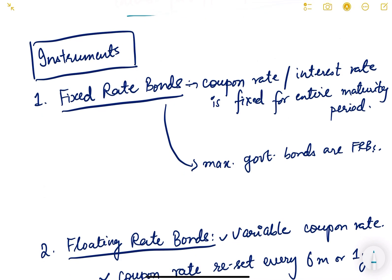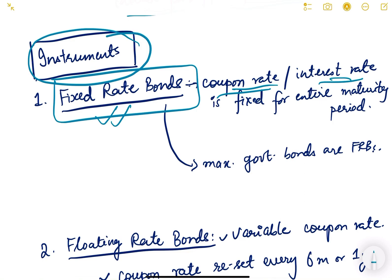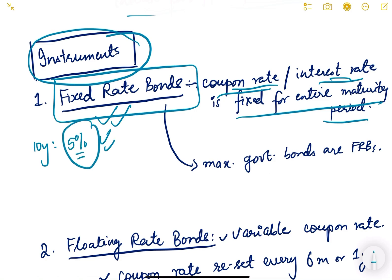Now let us look at the different instruments for government bonds. The first one is fixed rate bonds. The coupon rate or interest rate is fixed for the entire maturity period. For example, if it is a 10-year bond with a coupon rate of 5% per annum, it will remain 5% for all 10 years. Most government bonds in India are fixed rate bonds.